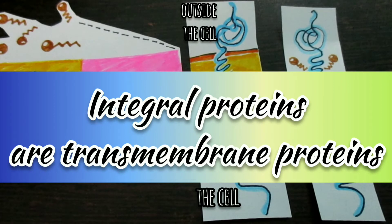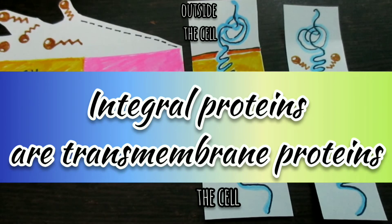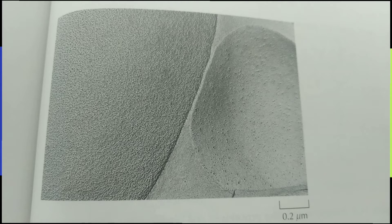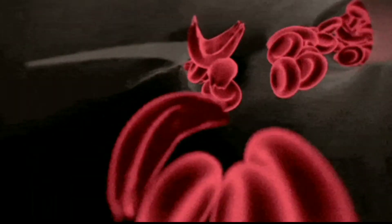Many integral proteins are transmembrane proteins, which span the lipid bilayer with portions exposed on both sides of the membrane. These proteins can be visualized in electron micrographs of plasma membranes prepared by a freeze fracture technique. In these specimens, the membrane is split and separated into its two leaflets, and transmembrane proteins are apparent as particles on the internal faces of the membrane. Most transmembrane proteins of the plasma membrane are glycoproteins, with their oligosaccharides exposed on the surface of the cell.